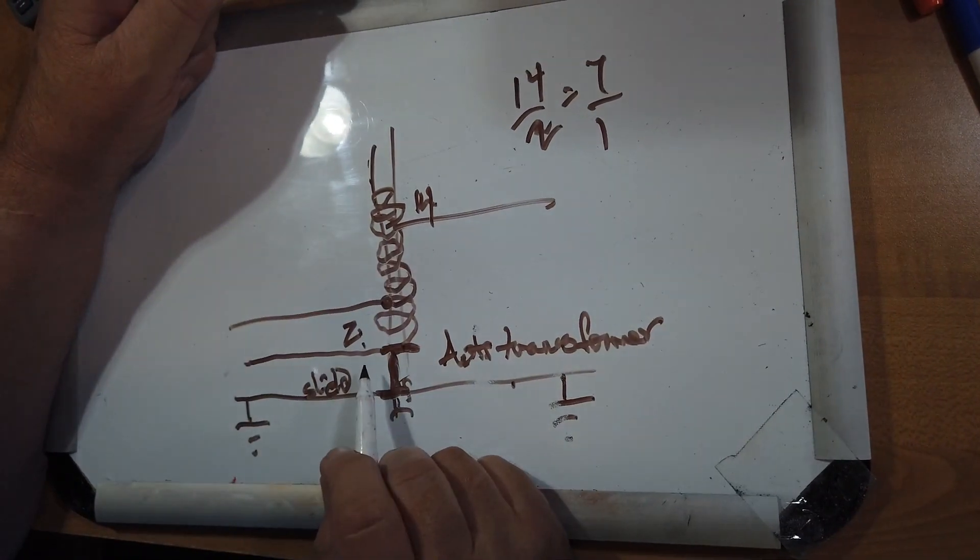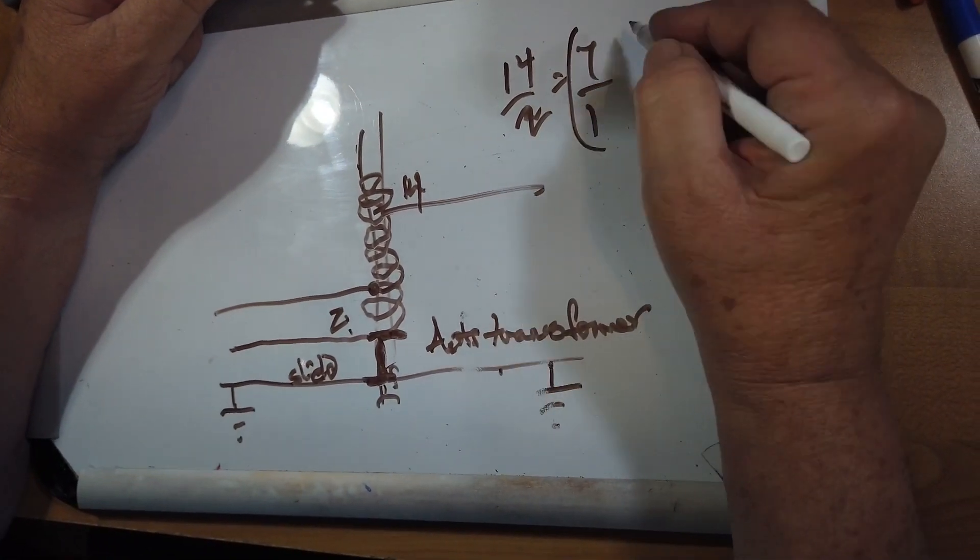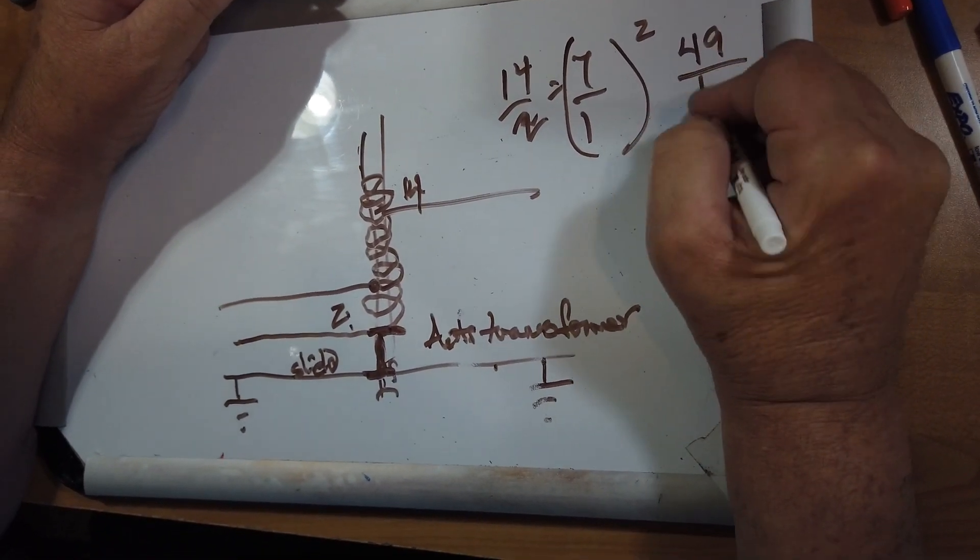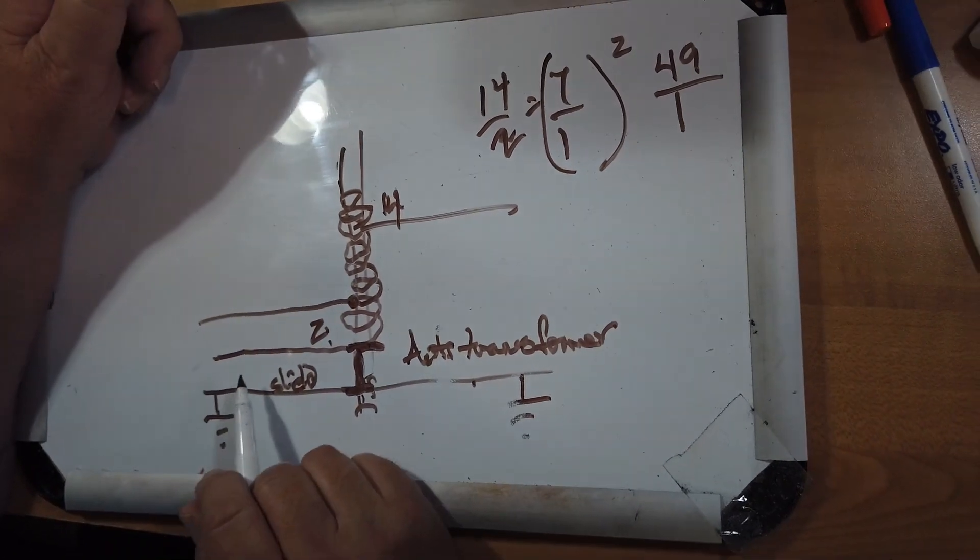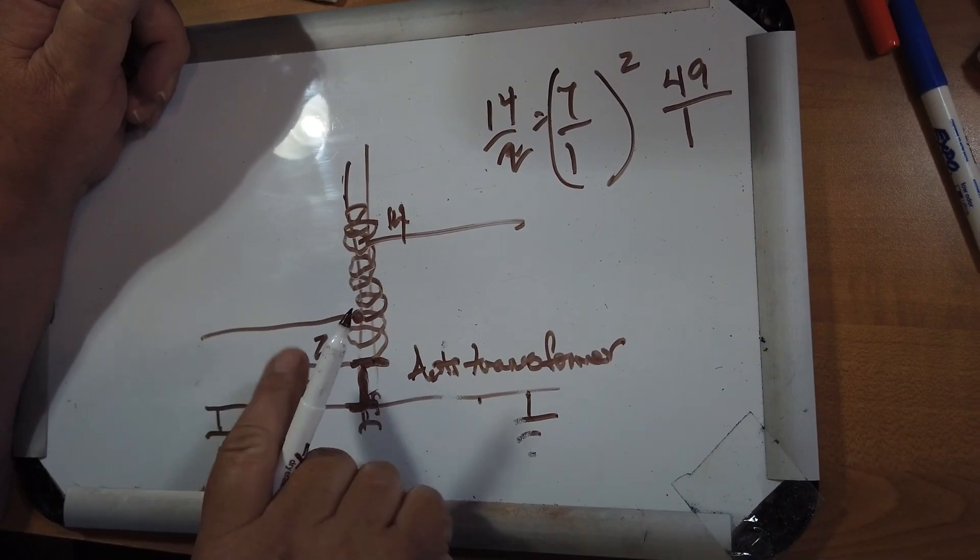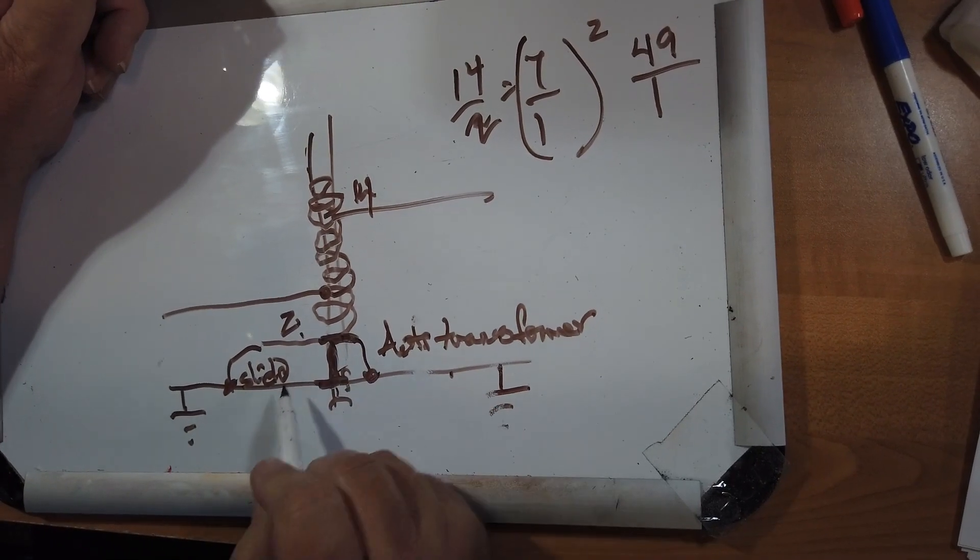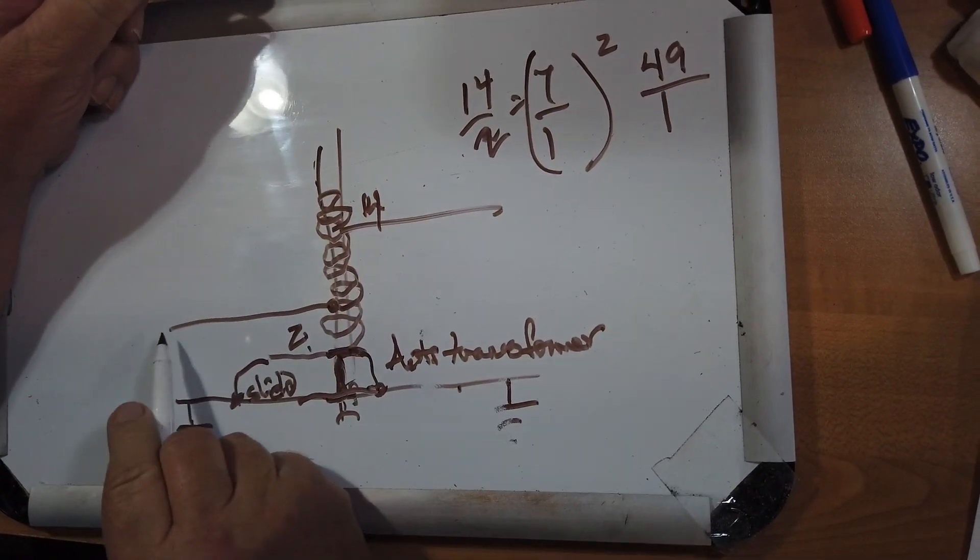Now to get the impedance ratio, you take this and square it, and you get 49 to 1. So a 49 to 1 unun looks like this. This is connected to here, and that's connected there, and they're connected through. It's unbalanced here, and it's unbalanced down here.